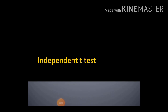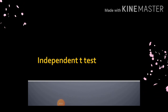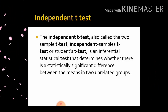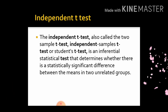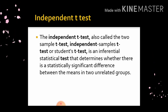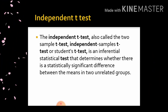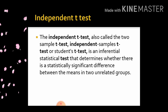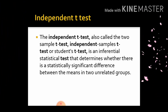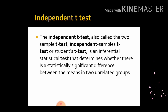Dear students, today we are going to discuss the Independent T-Test, also called the Two-Sample T-Test, Independent Sample T-Test, or Student T-Test. It is an inferential statistical test that determines whether there is a statistically significant difference between the means in two unrelated groups. Here, we compare the means of two independent or unrelated groups.